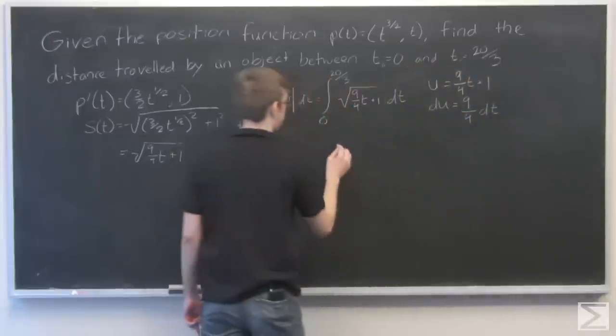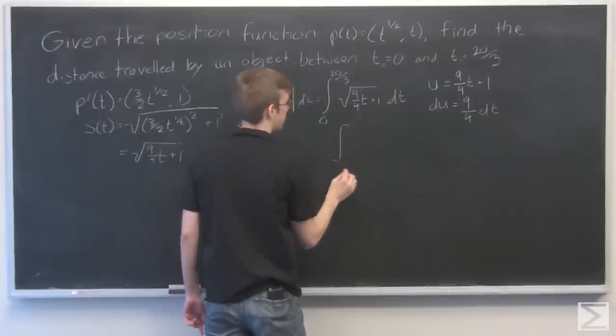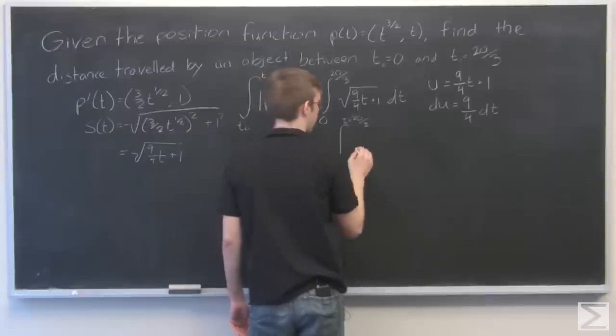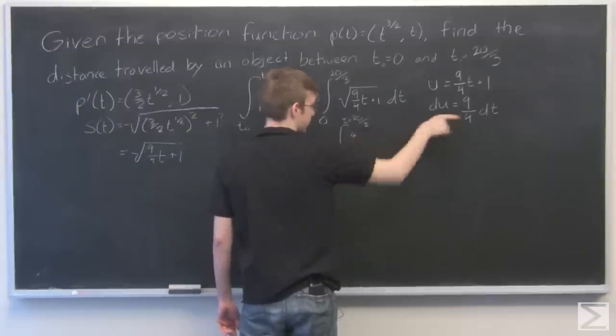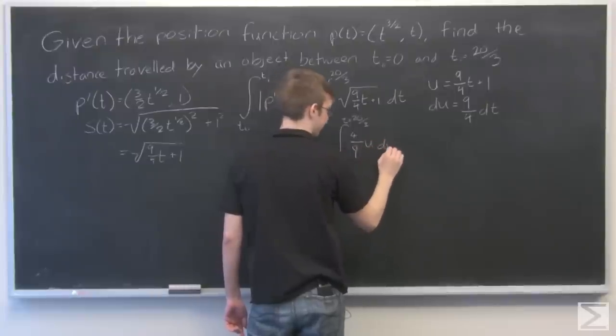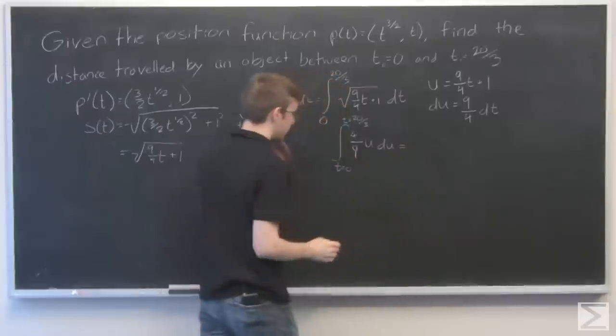So our integral becomes, still in terms of t—I like to write t equals 0 and t equals 20 thirds—we have, this gets flipped around, so 4 ninths integral of u times the square root of u du.